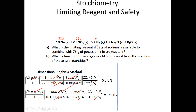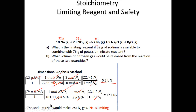Now choose the limiting reagent: the chemical that produces the lesser quantity of product is the limiting reagent. Sodium produces only 6.2 liters of nitrogen, while potassium nitrate produces 17 liters. Therefore, sodium (Na) is our limiting reagent — we would run out of it first.